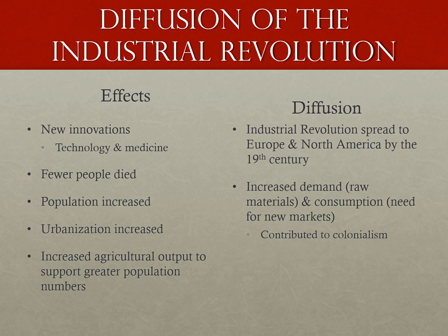A common misconception is that the Industrial Revolution happened overnight, but the reality is it was a long-term event. In the long term, death rates declined due to improvements in sanitation and inventions like soap and new medicines. But in the short term, death rates actually went up due to high levels of pollution, the dangers of factory life, and inadequate sanitation systems.